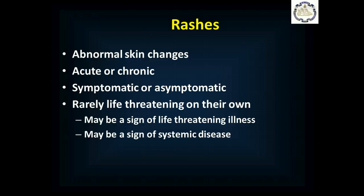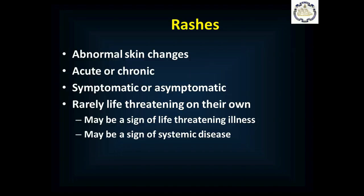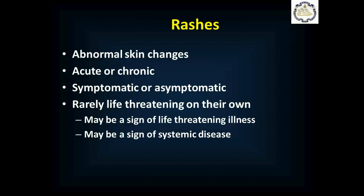Think about the patient with hives who is stung by a bee and develops hives. They may not have any other symptoms, but you need to be worried because that's a sign of a systemic response — a full-body response to the bee sting. Then they start to develop shortness of breath, they get low blood pressure, they go into shock and potentially die. So that rash, while it isn't in and of itself life-threatening, is a sign of underlying life-threatening disease.